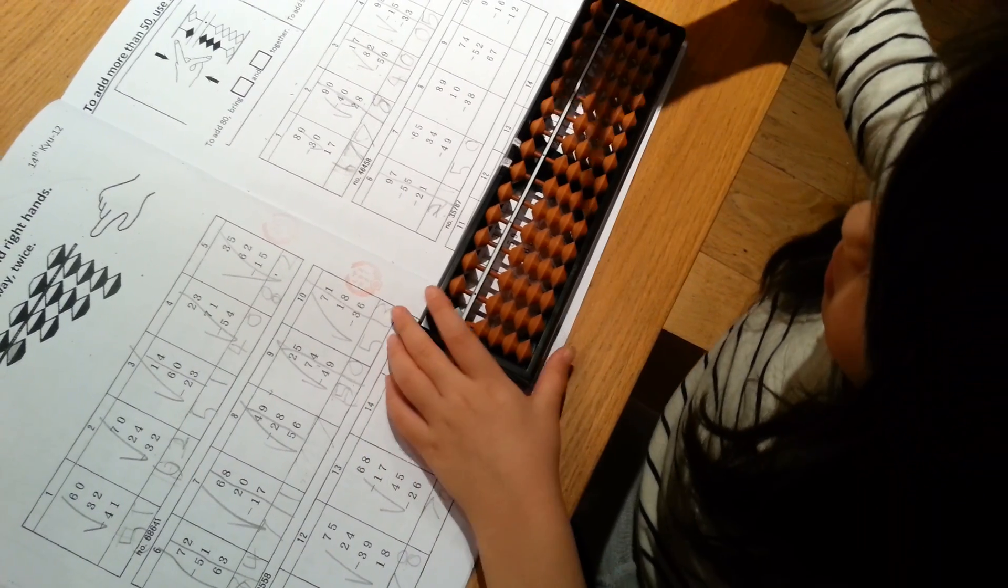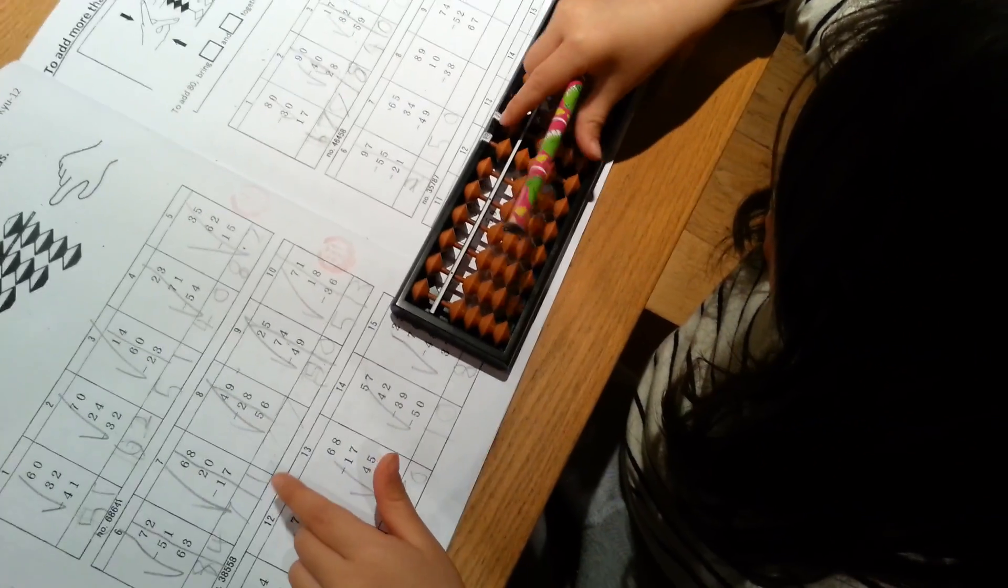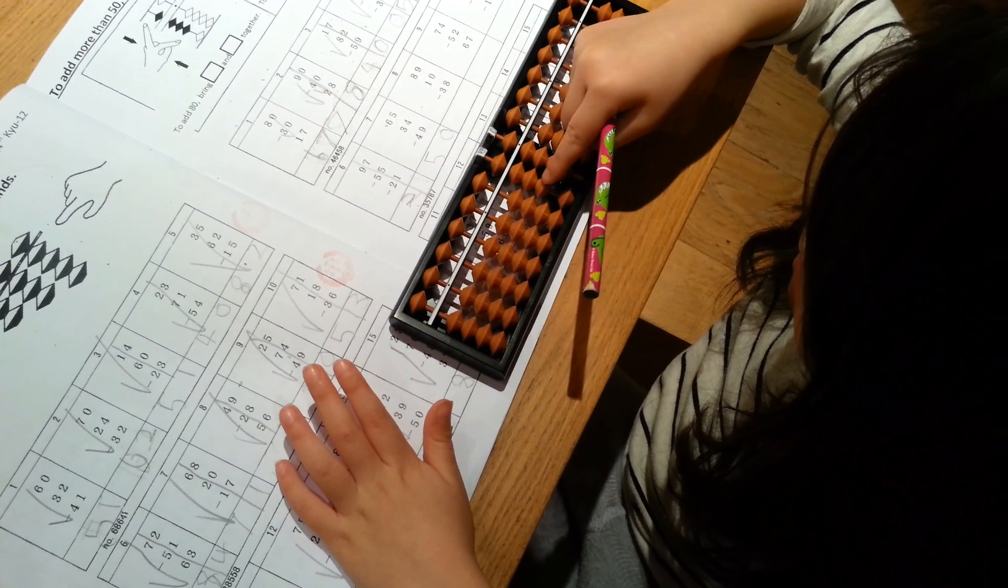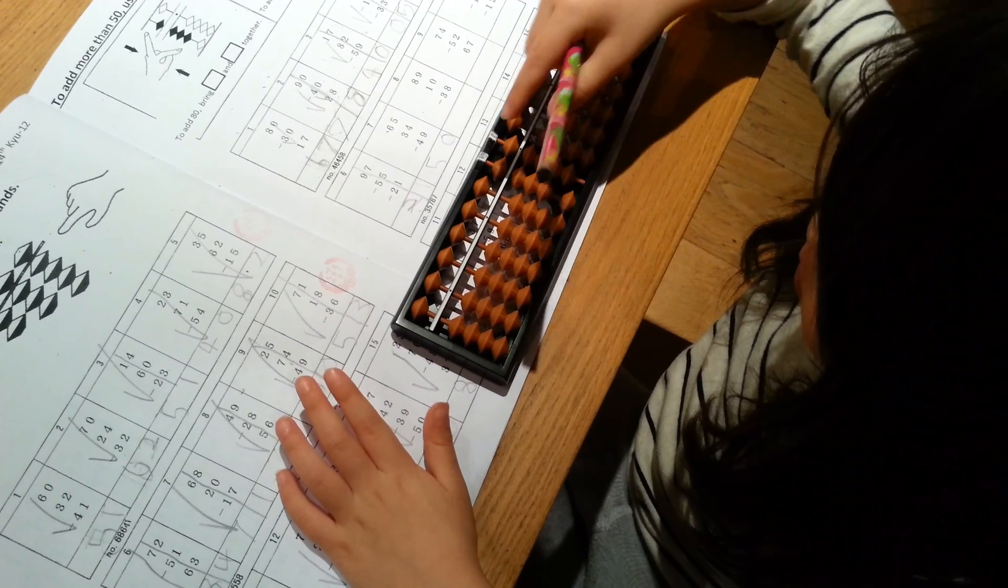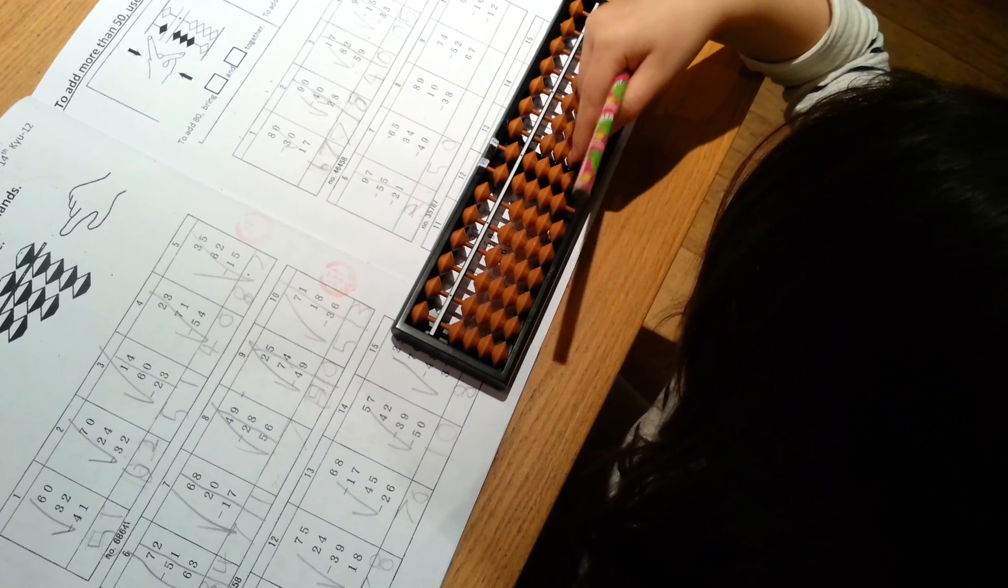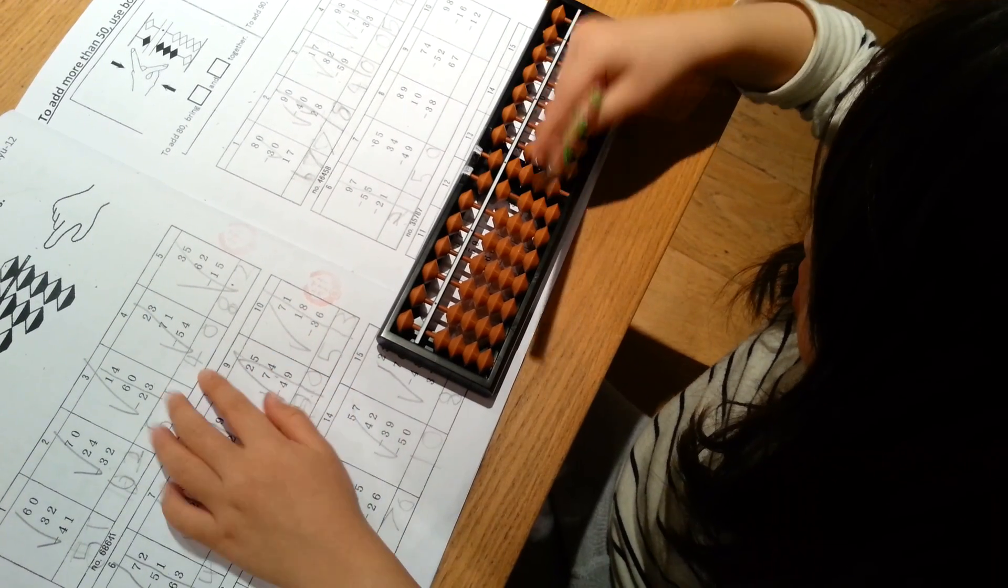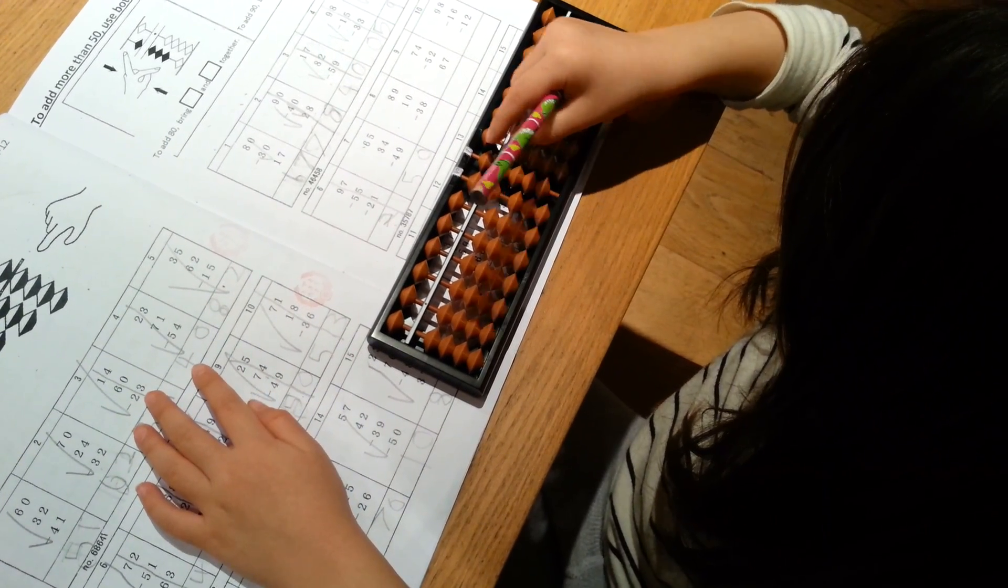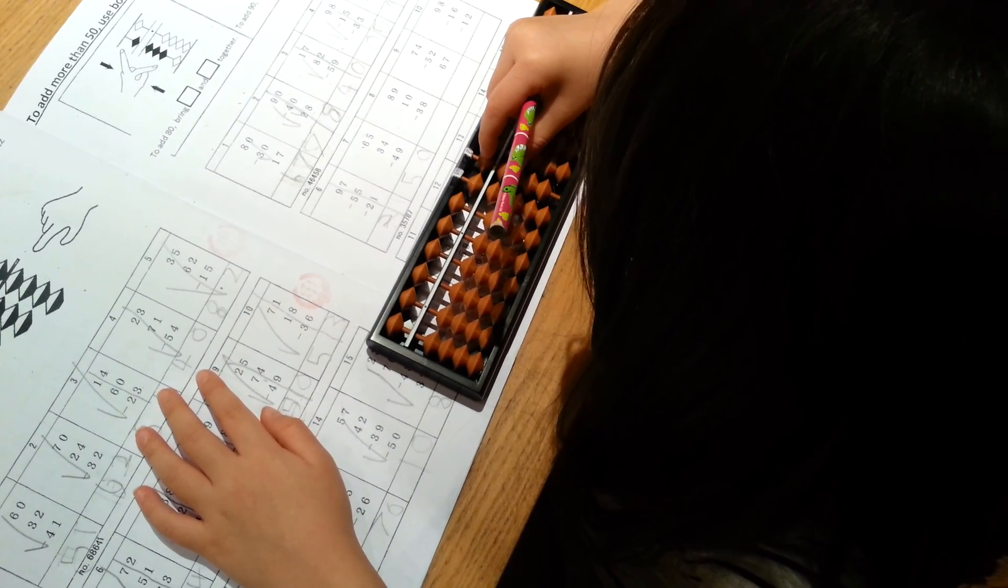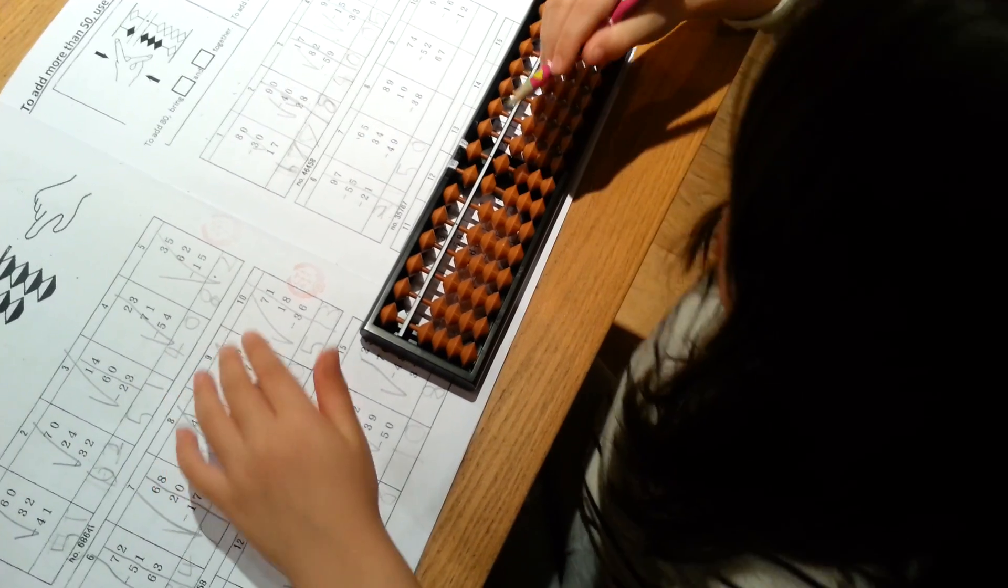89. Add 10. No, that's take away. You need to add 10, that's right. And take away 38. That's it. 5 and 3, yeah, very good.